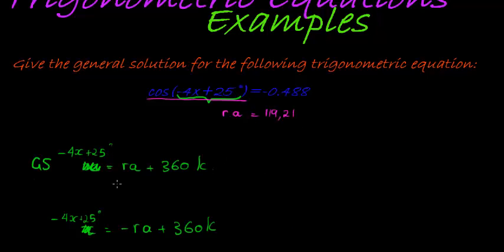In other words, that's what we are substituting in this point: 119.21 plus 360 times k, and the same on here, negative 119.21 plus 360 times k.